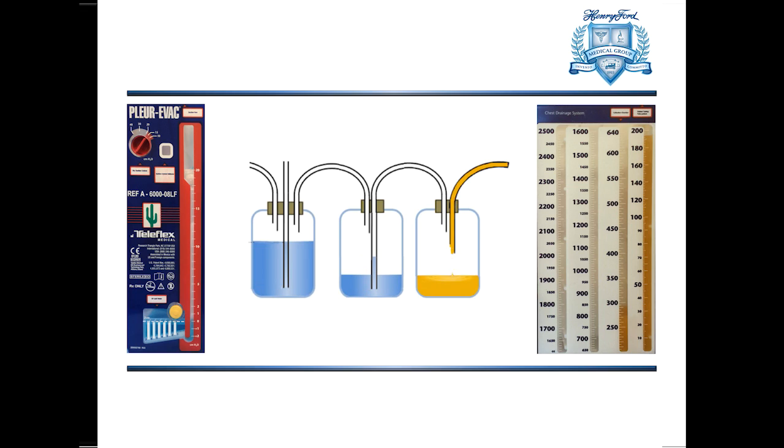The first bottle in the three-bottle system was simply a collection chamber. This is the bottle that was used to collect fluid that came from the lung. And this first bottle in the three-bottle system is recapitulated in the right side of the Plurivac where you see a chamber that is used for collection.